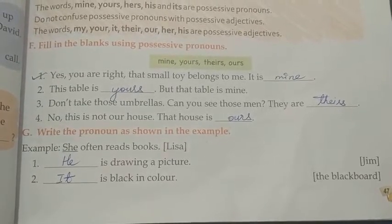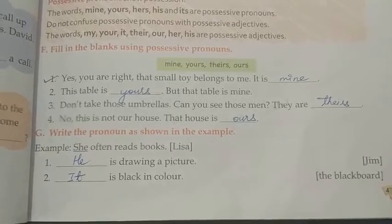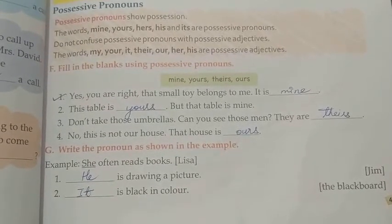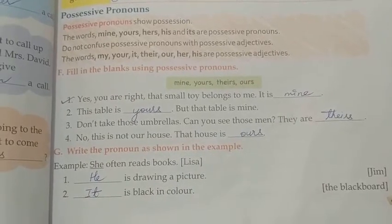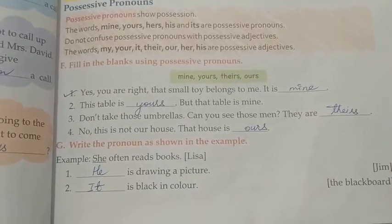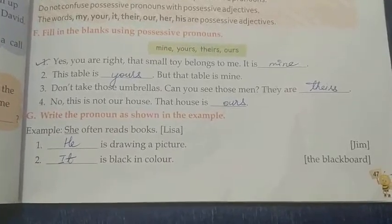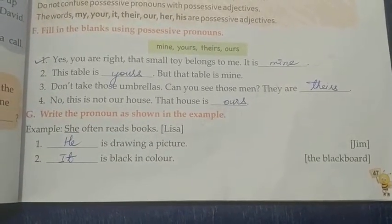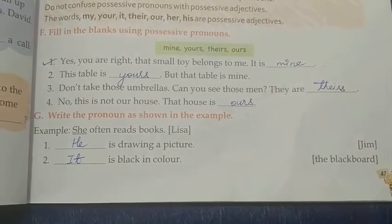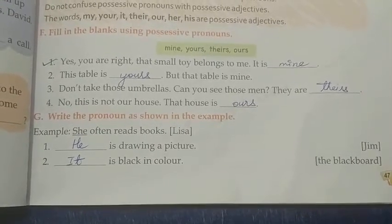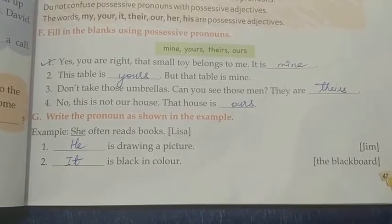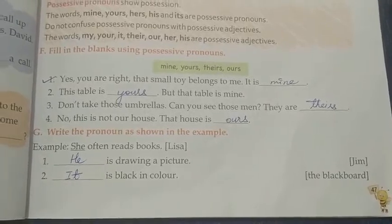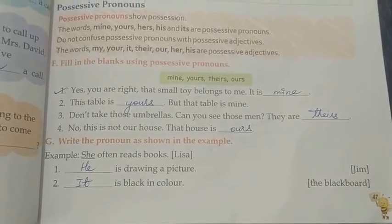Write the pronoun as shown in the example. In Exercise G, you have to replace the noun given at the side of the sentence with the appropriate pronoun to fill in the blank. For example, number one: Jim is the noun given — replace it with he. He is drawing a picture. Number two: Replace blackboard with it. It is black in color.